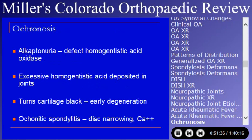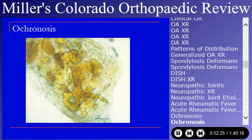Ochronosis shows up on in-training exams about every four years — also called alkaptonuria. It is a defect in homogentisic acid metabolism. Excessive homogentisic acid gets deposited in the joint; the cartilage turns black and degenerates early. Commonly associated with back pain and disc space narrowing. There is staining in the synovial fluid if you look at it, and if you see it arthroscopically the cartilage is black.